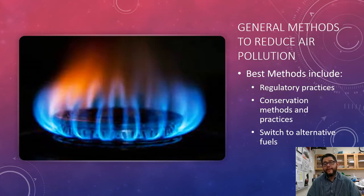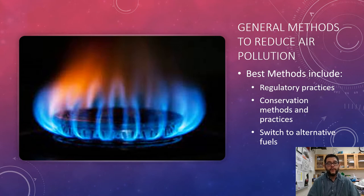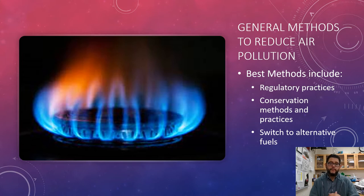We start by thinking about general methods. The best way to reduce something is to get rid of or reduce the source. Switching to alternative fuels will be a big help, because most of these pollutants are going to be from fossil fuels. Having some sort of regulatory practice or conservation method is going to reduce those sources to begin with, and that will in general reduce air pollution overall. You also have to be specific to which source, which we'll go through right now.